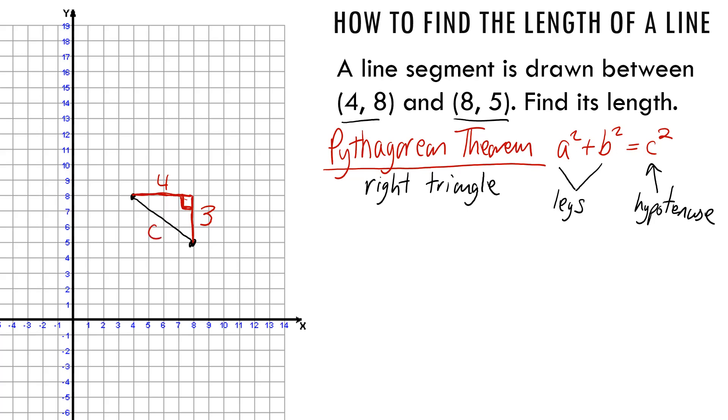And c is the hypotenuse, that's what we're trying to find. We don't know what that is. Is this okay so far? Then we literally just take those numbers, substitute it into the formula. So I'm just going to rewrite the formula: a squared plus b squared equals c squared. Doesn't matter, they're both legs. That's right, four to the second power plus three to the second power equals c to the second power. We're still trying to find out what c is.